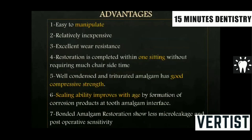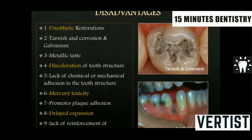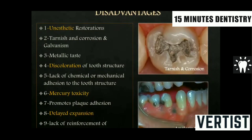Advantages of amalgam are many: it is easy to manipulate, can be done in one setting, has good compressive strength, and best of all, the sealing ability of the amalgam restoration increases as the restoration matures. Disadvantages include its unaesthetic appearance and its habit of discoloring adjacent tooth structure due to tarnish and corrosion products. The main problems are mercury toxicity and delayed expansion. It is believed that mercury vapors are leaked from the restoration throughout its life, which may cause problems for the patient.